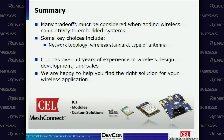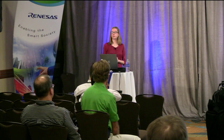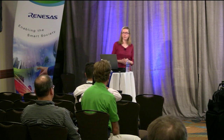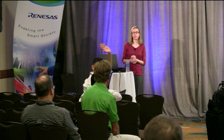In summary, many trade-offs must be considered when adding wireless connectivity to embedded systems. Key choices include network topology (star or mesh), wireless standard (Bluetooth vs. Wi-Fi vs. 802.15.4), and antenna type (external vs. internal). CEL has over 50 years of experience in wireless design, development, and sales and is happy to help find the right solution for your wireless application.